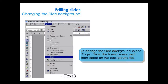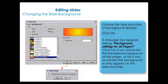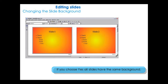To change the slide background, select Page from the Format menu and then select the Background tab. Choose the type and style of background design and click OK. A message box appears asking if the background setting should apply to all pages. Click Yes if you would like the background to appear on all pages, or No if you would like the background to appear only on the selected slide.